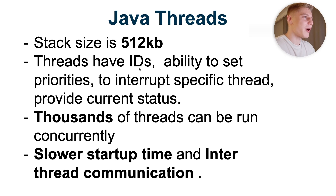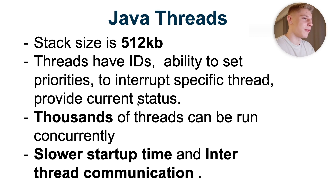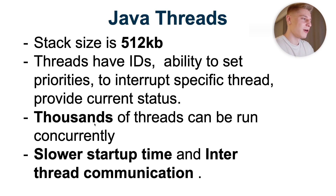Java threads are managed by the kernel or operating system. Each thread has its own ID, and we have the ability to set priorities, interrupt any thread, and get the current status of any thread. So they have much more capabilities. However, the stack size is 512 kilobytes, which means we're able to run only thousands of threads concurrently. They also have slower startup time and slower inter-process communication.